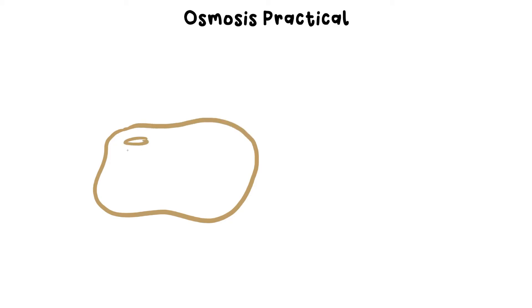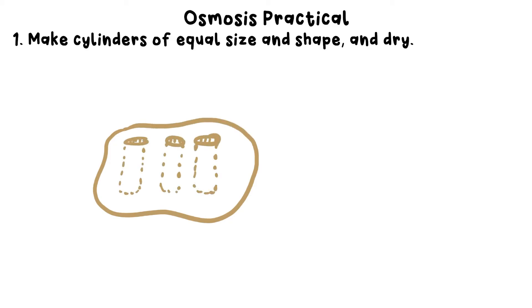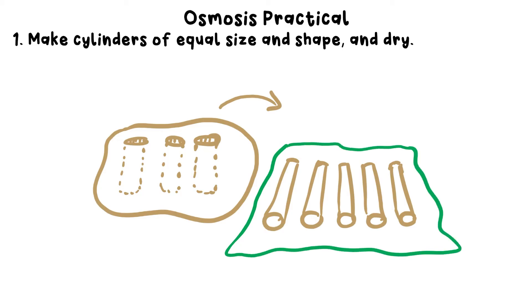Step 1: Bore out equal-sized cylinders from a potato or another vegetable of your choice, and cut them all to the same length. Making them the same size and shape means they have the same surface area for osmosis to happen across. Remove any skin, because it's not permeable—water can't pass through it—and dry them off briefly with some paper towel. If there's excess water on the surface, you won't get an accurate measurement of their mass.